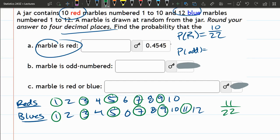So probability of marble is odd, 11 out of 22. That's not reduced, and it needs to be in a decimal, so that'll be 1 half or 0.5.